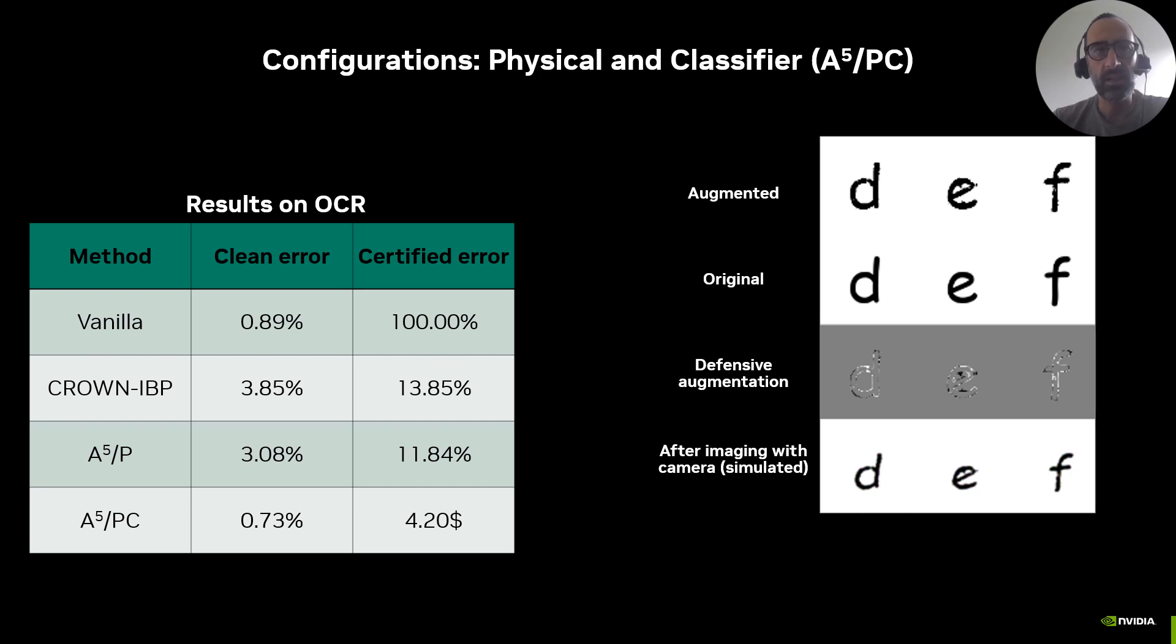Experimental results show that A5 can be used to create certifiably robust physical objects with performance that largely beats that of a standard robust classifier. Also in this case, best results are obtained by co-training the classifier while adapting the shape of robustified fonts. The image on the right shows the appearance of original and robustified fonts.